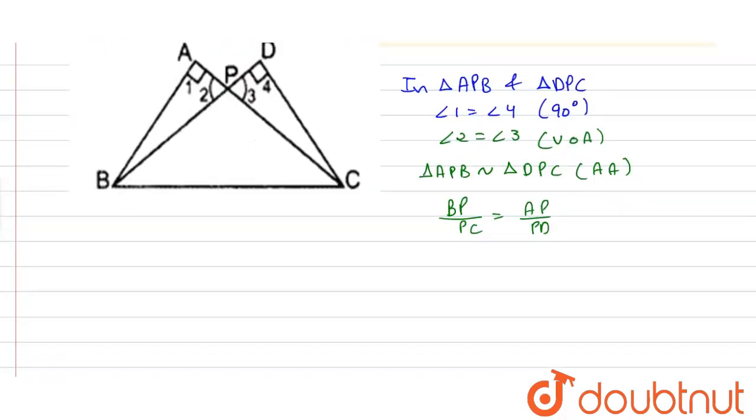So by multiplying this we get AP × PC is equal to BP × PD, which is our answer.